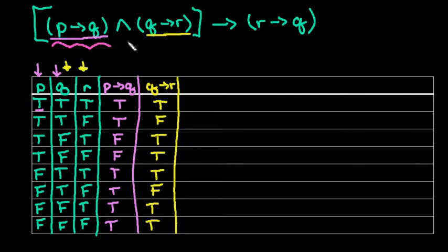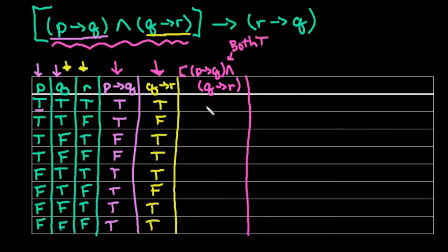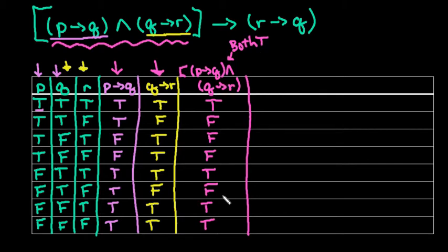Now we put together the column for (P then Q) AND (Q then R). With AND, both must be true to be true. True-true is true, true-false is false, false-true is false, false-true is false. True-true is true, true-false is false, false-true is true, and true-true is true. If they're both true we assign T; otherwise false.